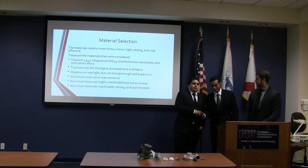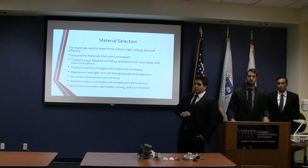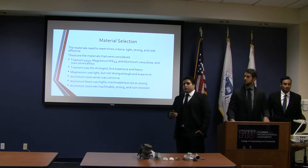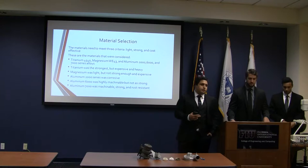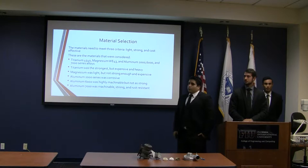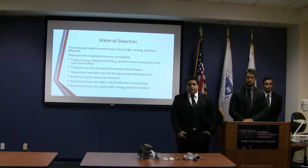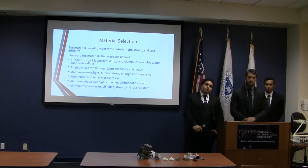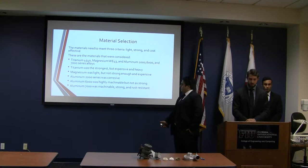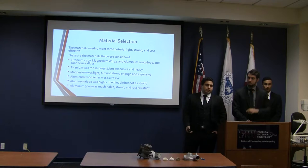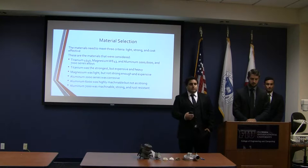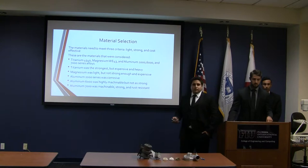For material selection, the material needed to meet three criteria: strong, light, and cost-effective. We considered titanium 4540, magnesium WV43, and the 2000, 6000, and 7000 series of aluminum. Titanium 4540 is among the strongest but expensive and heavy. Magnesium has the lowest density, making it lightest, but it's not as strong and is expensive. The 2000 series aluminum was corrosive and not as machinable as the 6000 or 7000 series. The 7000 series was comparable to the 2000 in strength, light, and highly machinable, making it the best compromise.